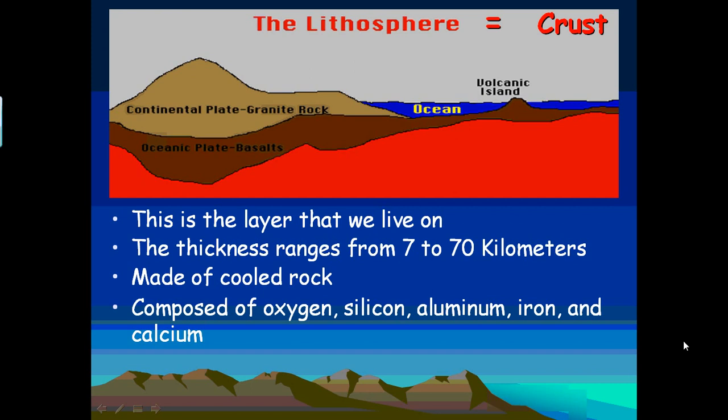The thickness of the Earth's crust ranges from 7 to 70 kilometers—7 kilometers in the oceans, up to 70 kilometers where mountains and thicker continental crust are located.